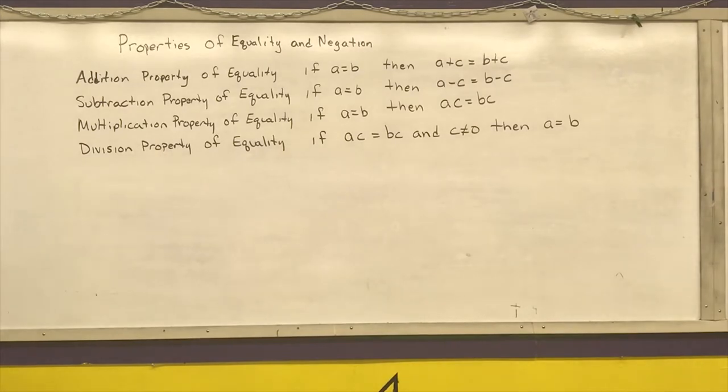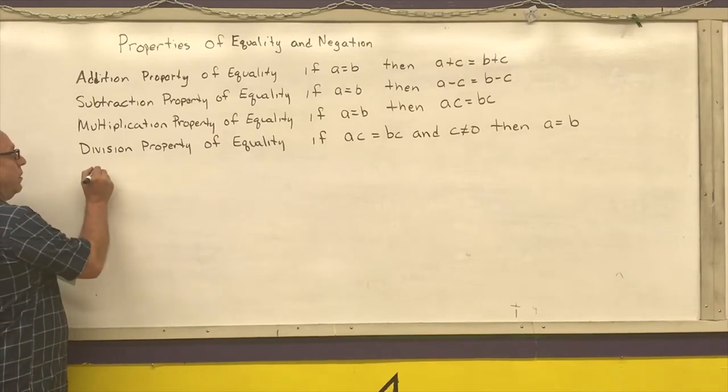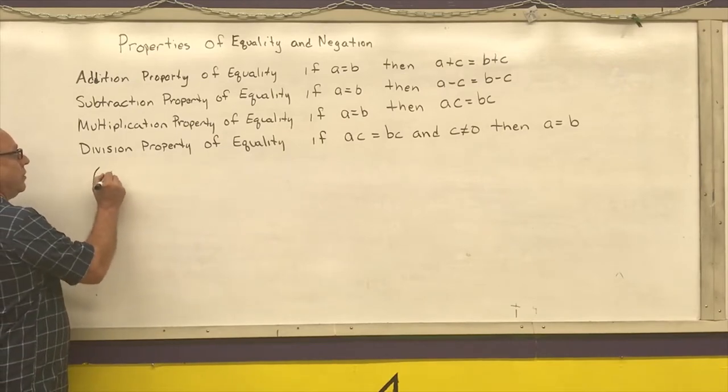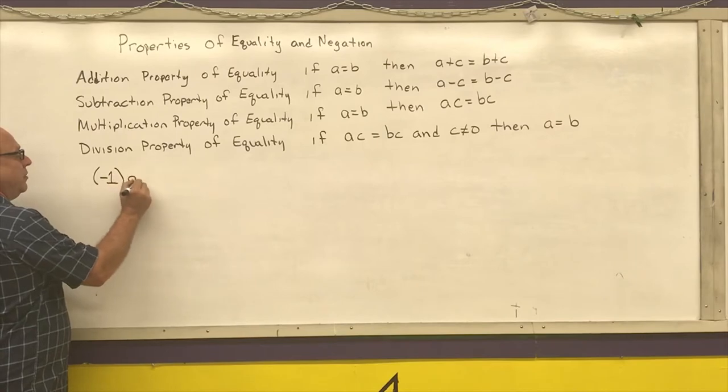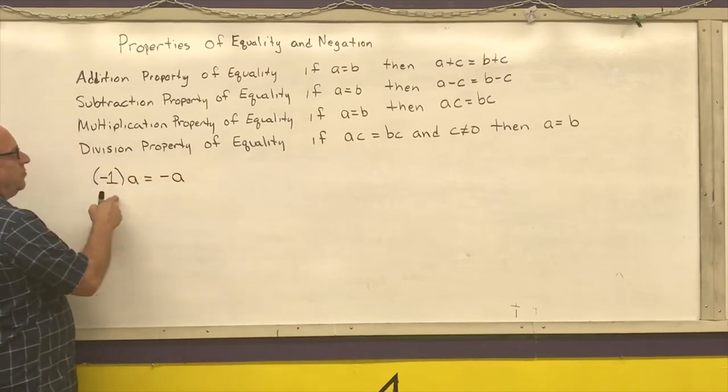So those are our four properties of equality. Our properties of negation are: negative one times a number is equal to that negative number, and these work both directions.